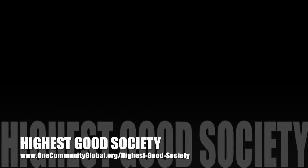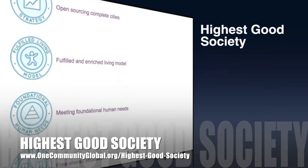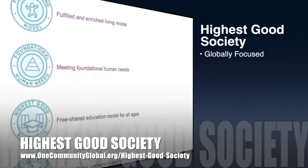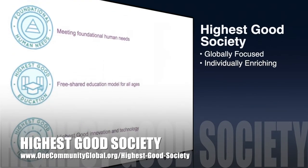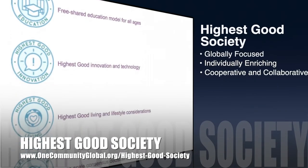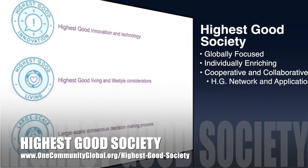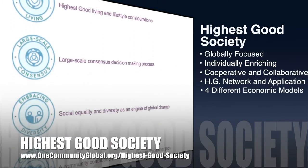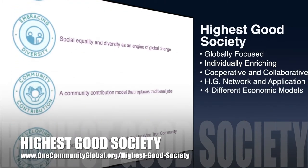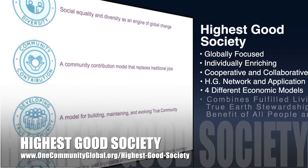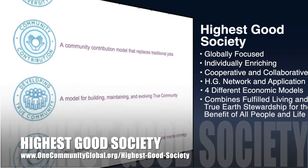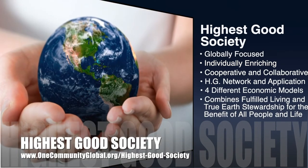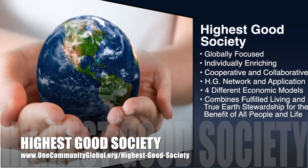The One Community approach to highest good society is globally focused, individually enriching, cooperative and collaborative. It includes a highest good network and application, four different economic models, and combines fulfilled living and true earth stewardship for the benefit of all people and all life on this planet.